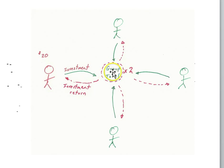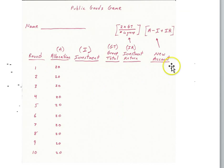So you see here's the group total times two, and then you distribute that money equally.